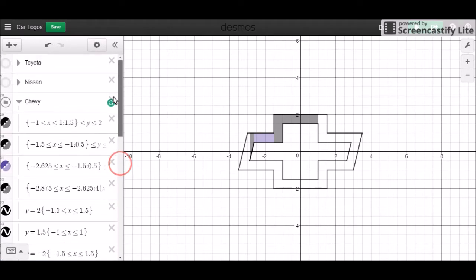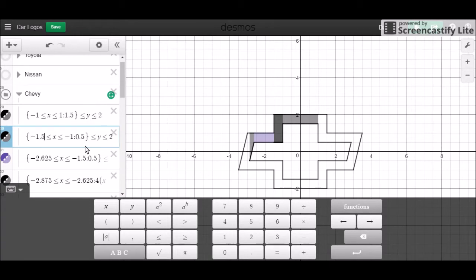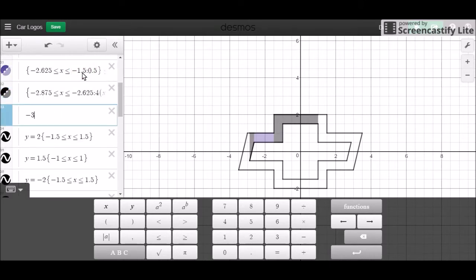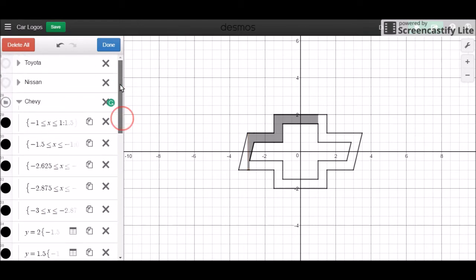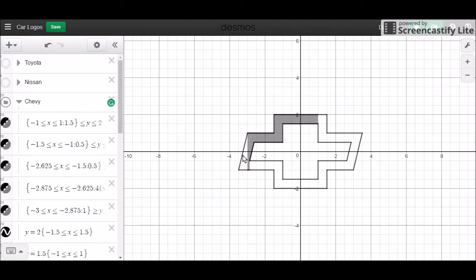It's going to go from negative 3 all the way to negative 2.875. And for this one we're starting at the top. So with the top, instead of less than negative 2, we're going to do greater than negative 2, and all the way down to negative 1. So for the rest of the border, do the same thing, and I'll come back and just fill the rest with you.